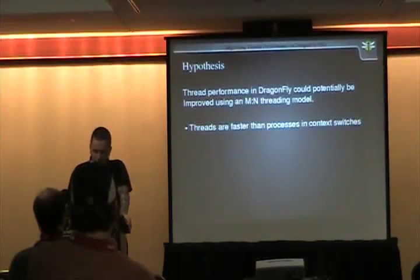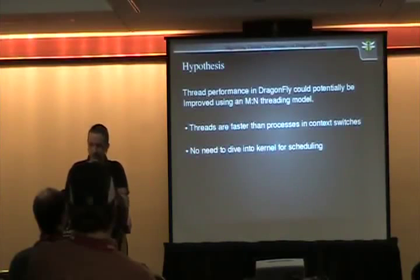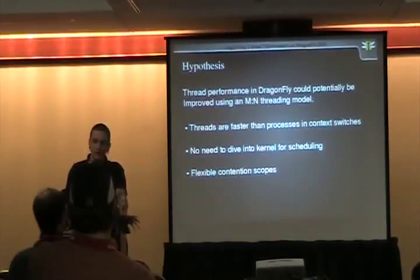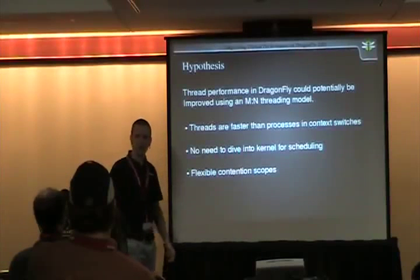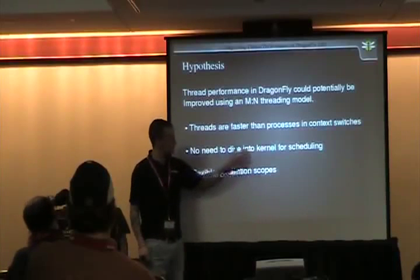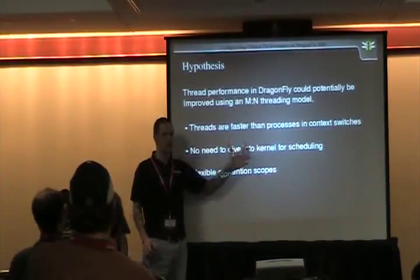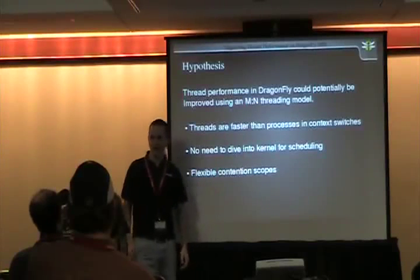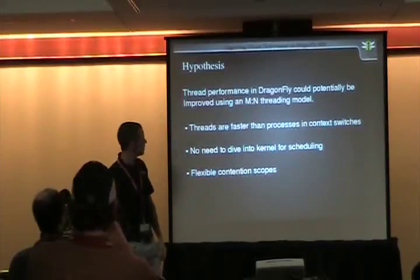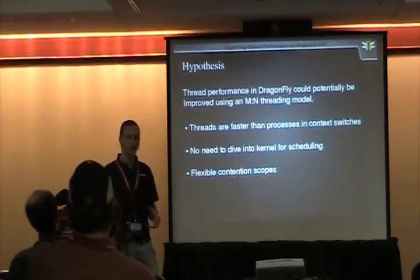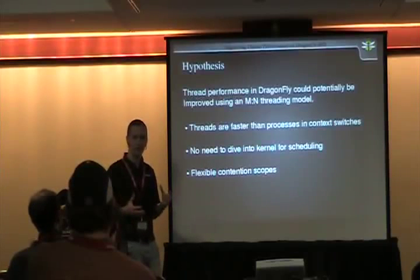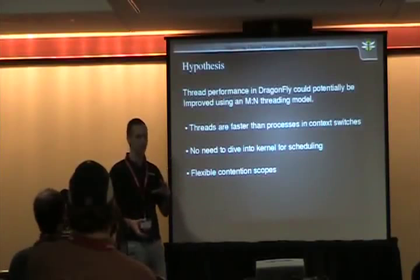DragonFly could be improved with M:N because threads are faster than processes for context switches and don't need to dive into the kernel. M:N also offers flexible contention scopes — in a 1:1 system it's not always obvious how to implement different thread priorities. With M:N and both schedulers cooperating, you should in theory be able to support real-time threads and different levels of priority.